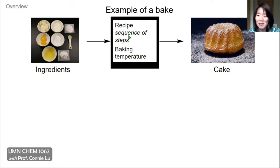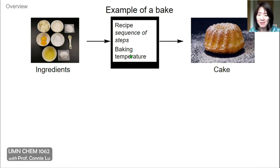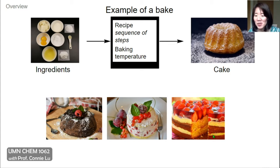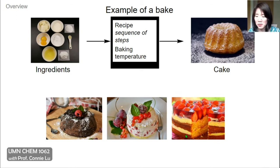It's typically a sequence of steps — what to do first, what to do next — and also some external things such as the baking temperature. Maybe the reason we want to understand how a bake happens is because we want to apply that knowledge and make other awesome cakes, like the delicious ones shown below, by applying that knowledge, tweaking it, and making even more beautiful bakes.